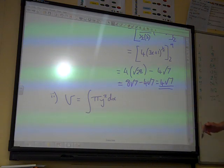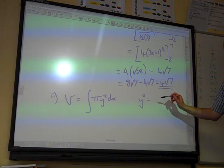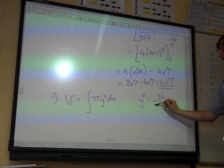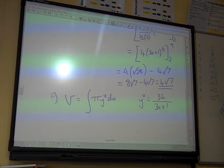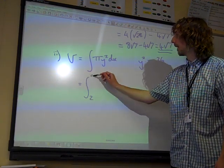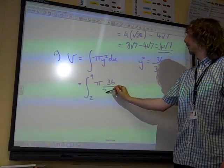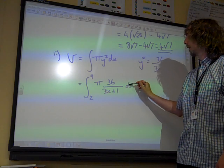Now, if y is 6 over root 3x plus 1, y squared is the square of that. So, 36 over 3x plus 1. So, that's what we're integrating now. So, our integral is the integral from 2 to 9 of pi times 36 over 3x plus 1 dx.